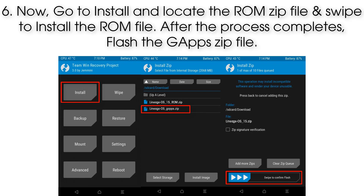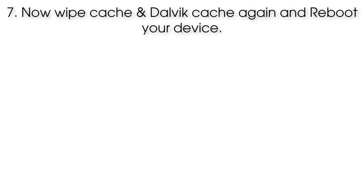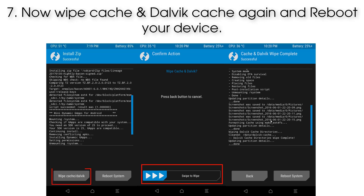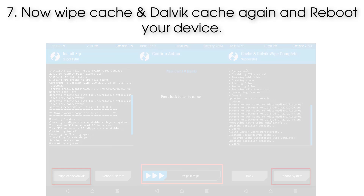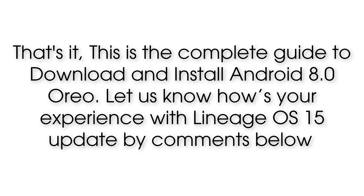After the ROM installation completes, flash the GApps zip file. Step 7: Wipe Cache and Dalvik Cache again, then reboot your device. That's it — this is the complete guide to install Android 8.0 via Lineage OS 15. Let us know your experience in the comments below.